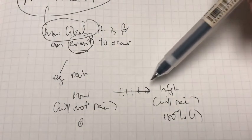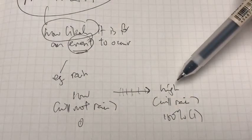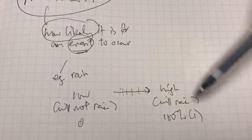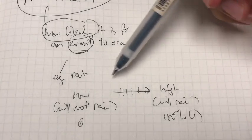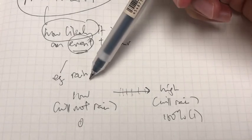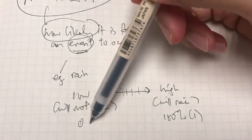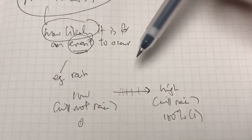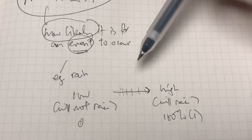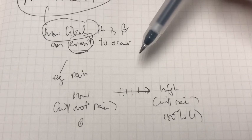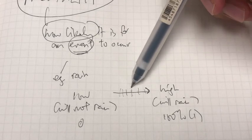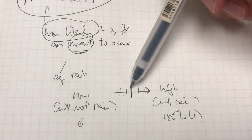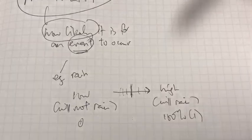The more likely something happens, it approaches 1. The less likely something happens, it approaches 0. So if there's a 50-50 or a 50% chance of something happening, it's right in the middle.